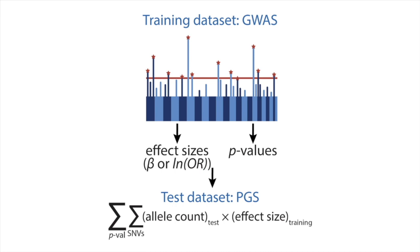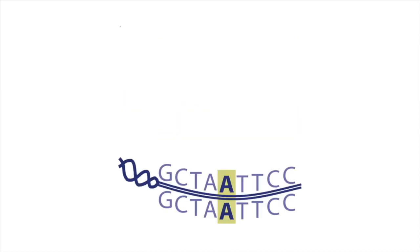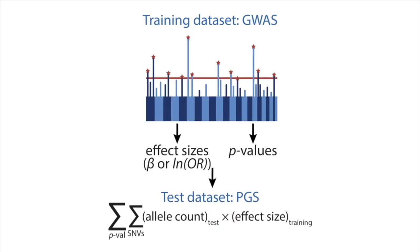No matter how you choose your weights, the next step is always the same. For each SNP you multiply the weight by the number of effect alleles. If A is the effect allele, then the multiplication factor would be 0 in this case, 1 here, and 2 here. You do this multiplication for each SNP and you sum over all variants to get a single score.